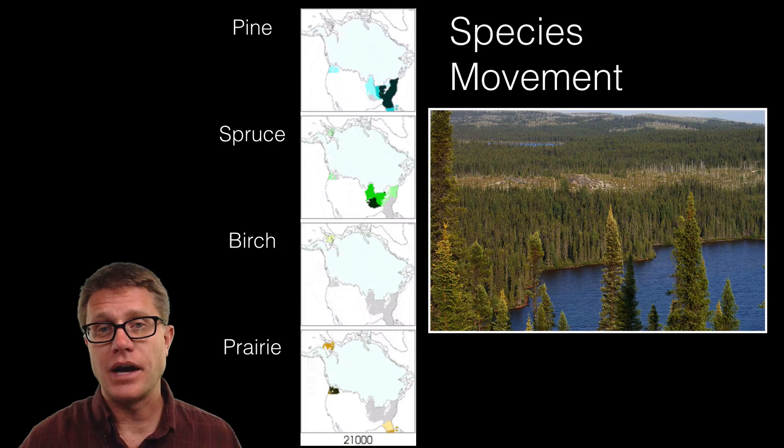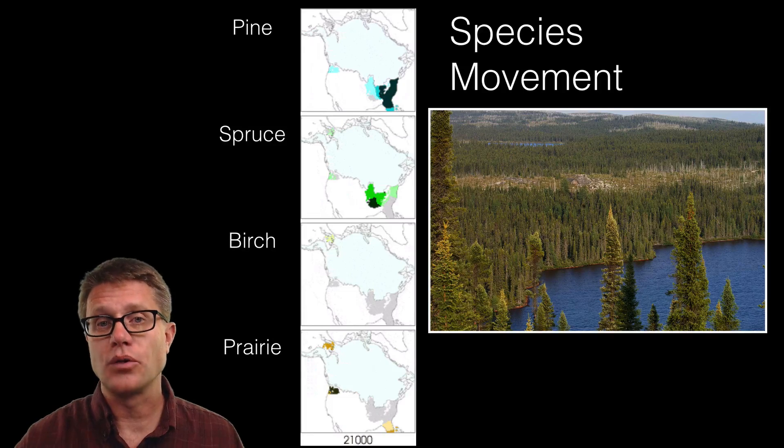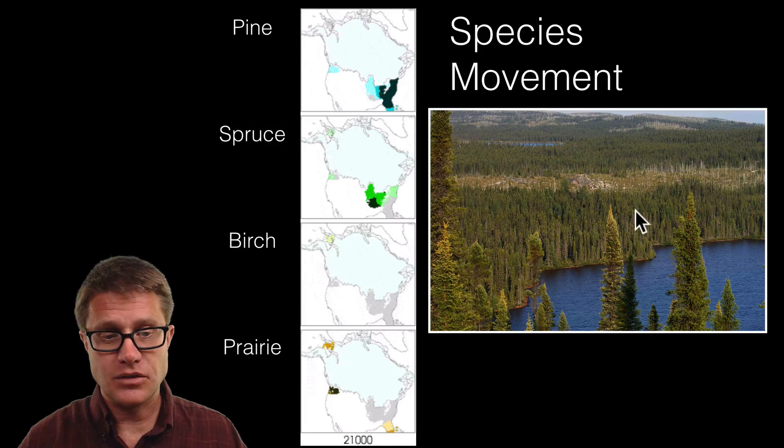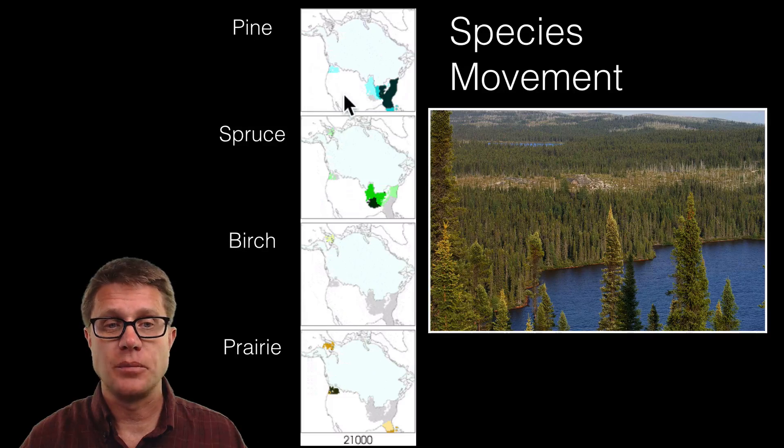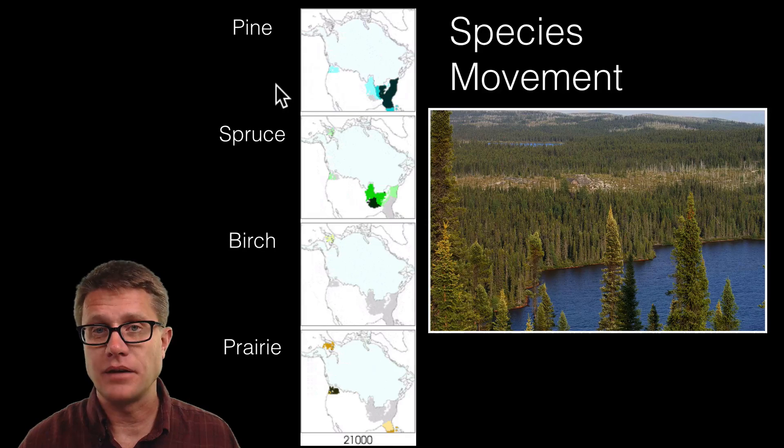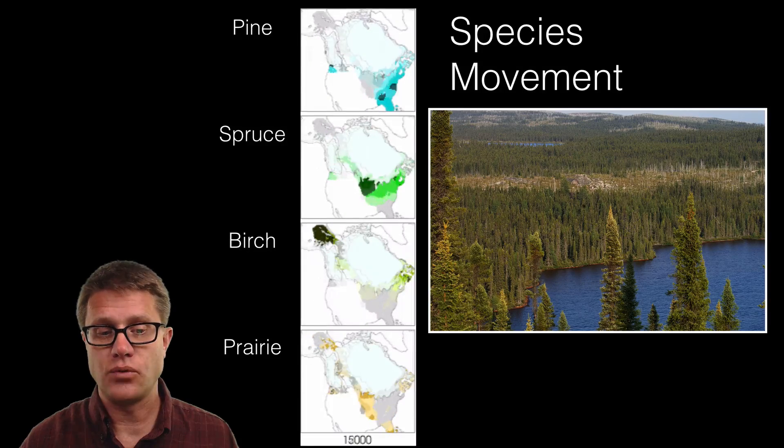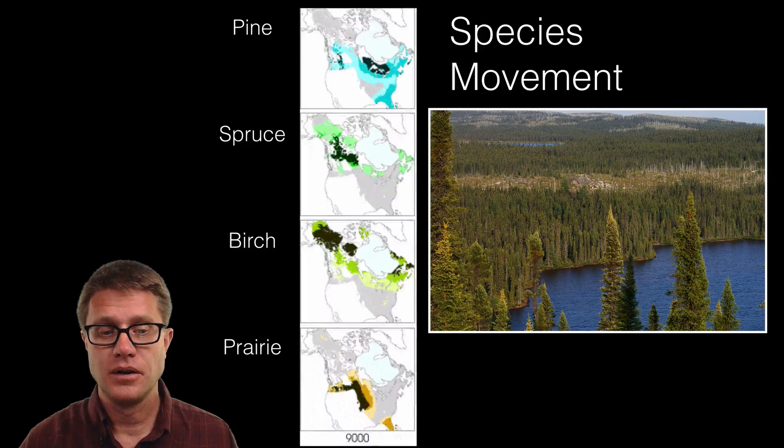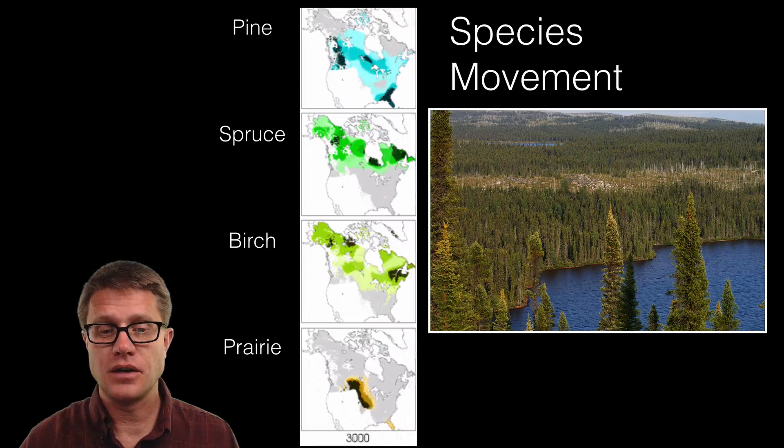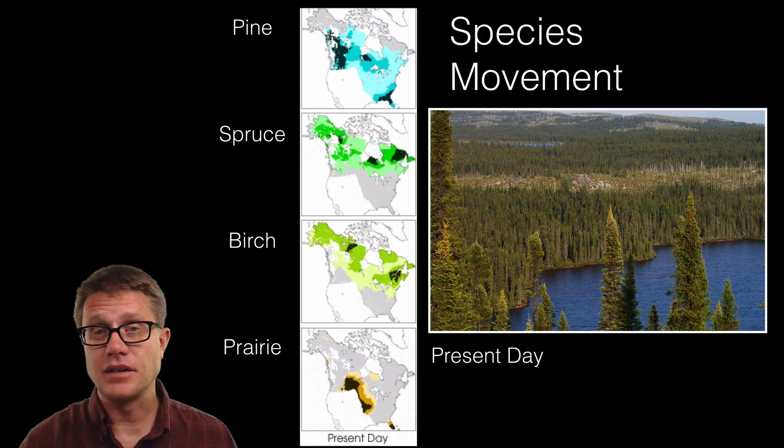Plants will do the same thing. And so as the planet has gotten warmer and warmer and warmer, this is a distribution of prairie, birch, spruce and pine trees over the last 21,000 years. And so watch what happens to their distribution. So now we are looking at 12,000 years ago. And now 6,000 years ago. And now present day distribution.